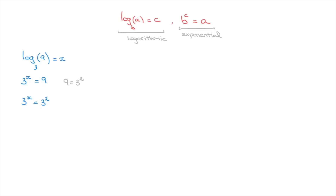Using that fact, we can rewrite the equation as 3 to the power of x equals to 3 to the power of 2. Now that both sides of the equation are written as powers of the same number, we can equate the exponents. In other words, we can now write x equals to 2. And that's the answer. Indeed, log base 3 of 9 equals to 2, which we could write in exponential form as 3 to the power of 2 equals to 9.